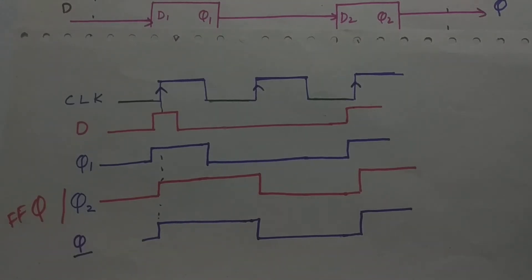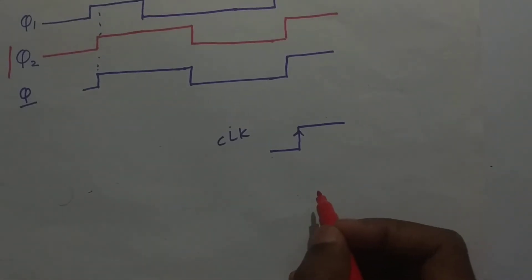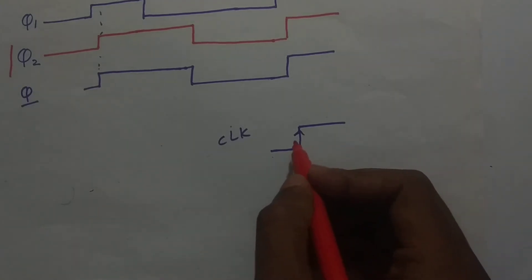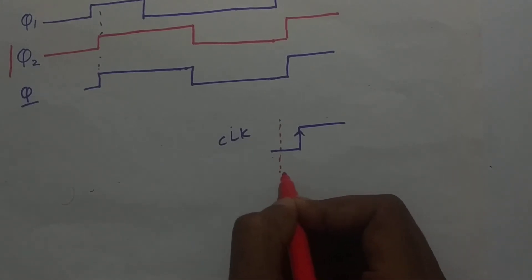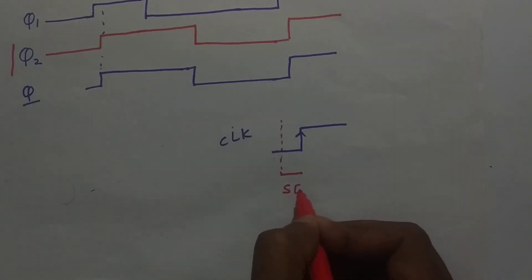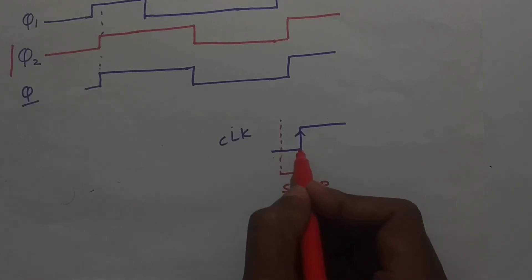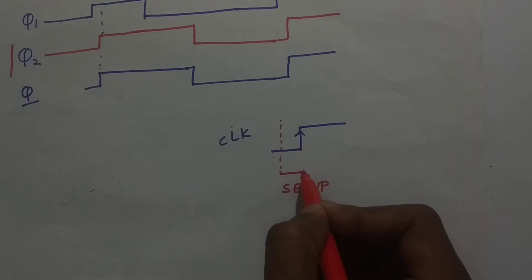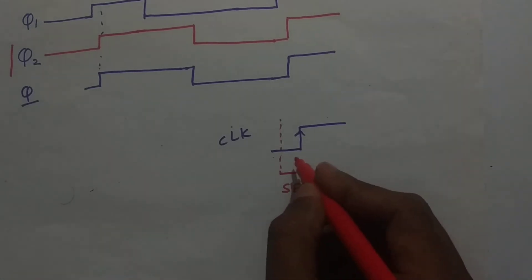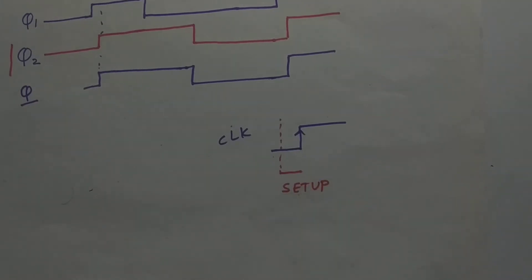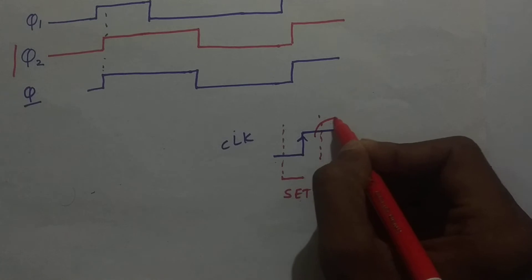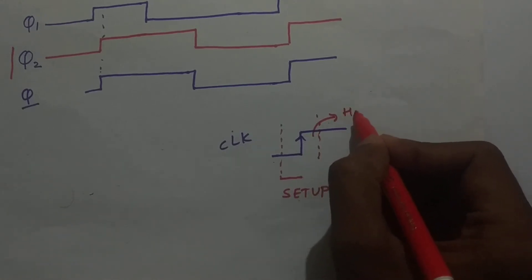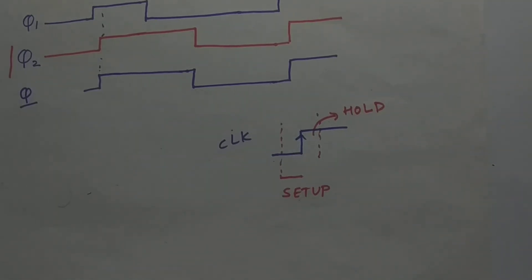Now let us discuss about the setup time and hold time. Considering a positive clock edge: before a certain amount of time, our input must be stable. This time is called setup time. Before this edge we have a certain amount of time — let's say x nanoseconds — before which our input must be stable and should not change. This window is called setup time. Hold time is after the positive edge — for a certain amount of time our input should not change. So setup time is before the clock edge, hold time is after the clock edge.